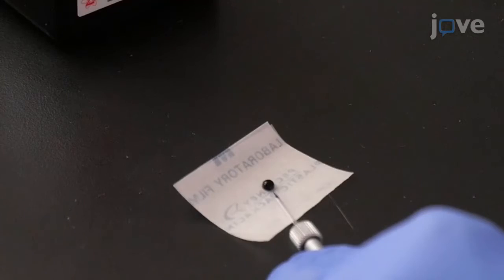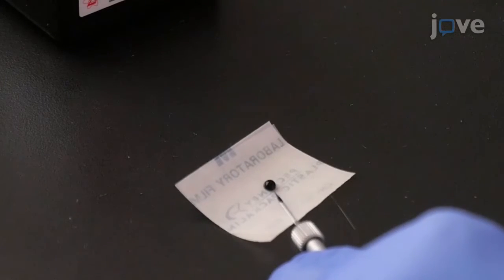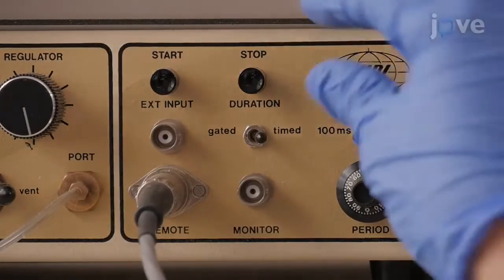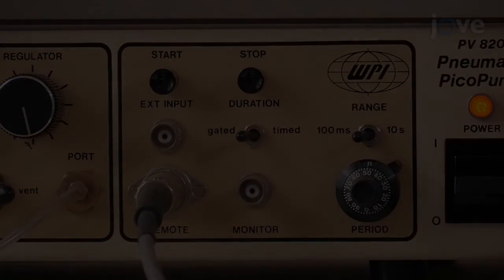Next, load a new needle with 0.4% trypan blue solution, and set the pneumatic injector to gated to allow a constant flow of the needle.